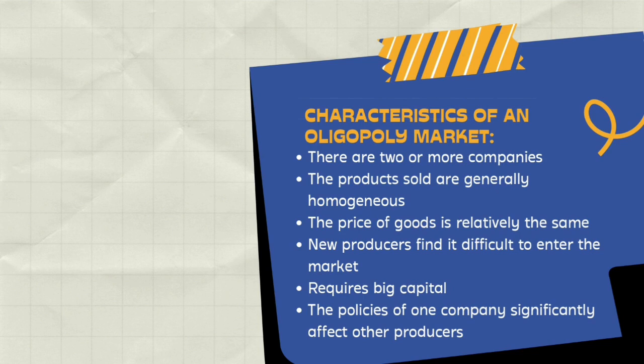The fifth characteristic is that it requires a major marketing strategy. Because products in the market are homogeneous with a small number of producers, intensive market socialization is needed. Consumers will switch to other products, so promotion and marketing strategies need to be carried out properly, as this determines whether the product stays in circulation.